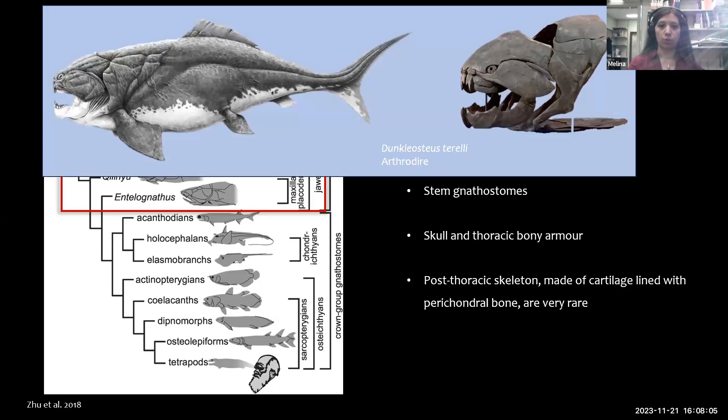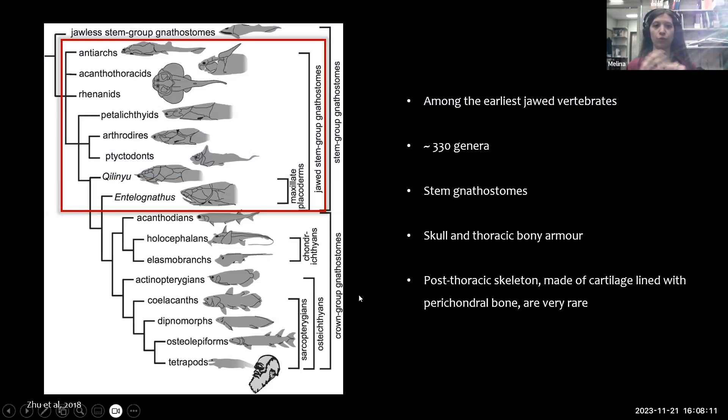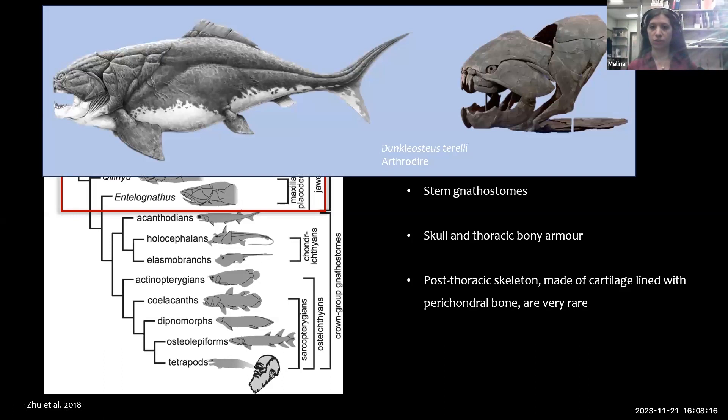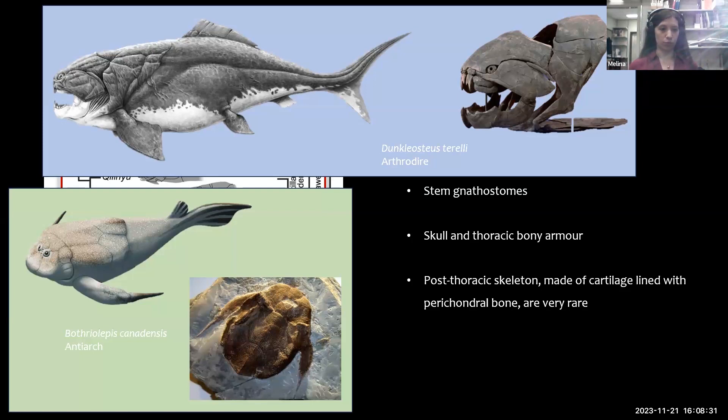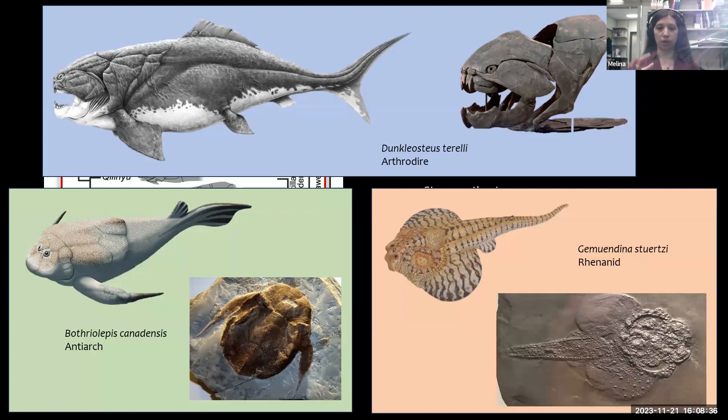There is a lot of morphological variety between different placoderm groups. The most famous is Dunkleosteus, reconstructed as an apex predator with a shark-like body shape. Other groups like bothriolepids — Antioch or Gemuendina — have a more flattened body and are interpreted as living closer to the sea floor.